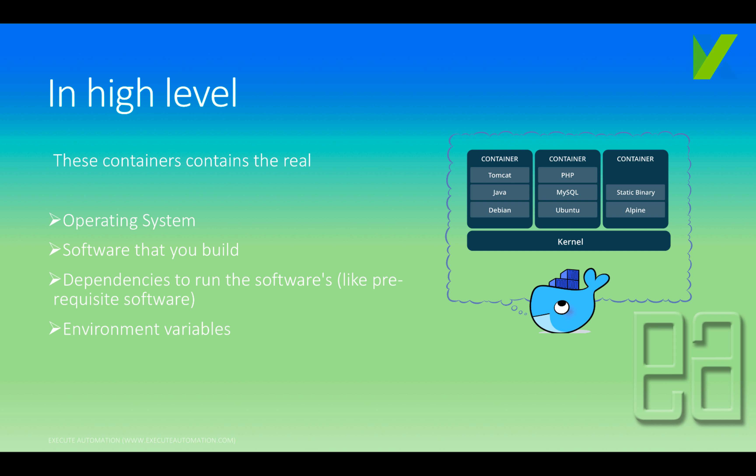As you can see on the right-hand side of the slide, there is an image containing a whale symbol — that's the Docker logo. On top of the whale kernel, you have containers sitting. These containers hold software like Tomcat, Java, and Debian all in one container. Another container has Ubuntu with MySQL and PHP, and yet another runs Alpine Linux with a static binary.